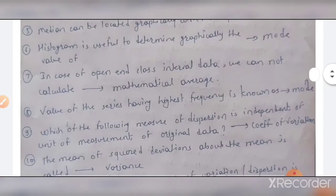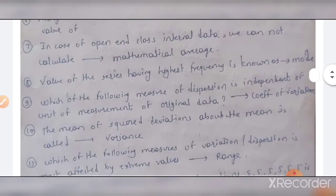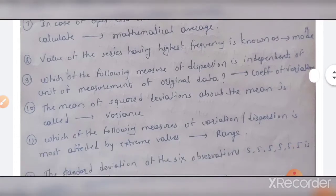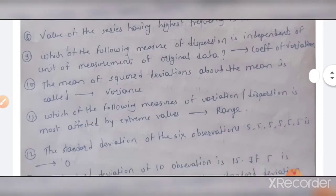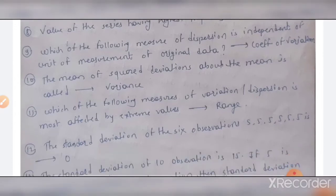The fifth MCQ: the median can be located graphically with the help of ogive curves. The sixth MCQ: a histogram is useful to determine graphically the value of mode. The seventh MCQ: in case of an open-end class interval, we cannot calculate the mathematical average. The eighth MCQ: the value of the series having the highest frequency is known as mode. The ninth MCQ: the measure of dispersion that is independent of unit of measurement is the coefficient of variation.